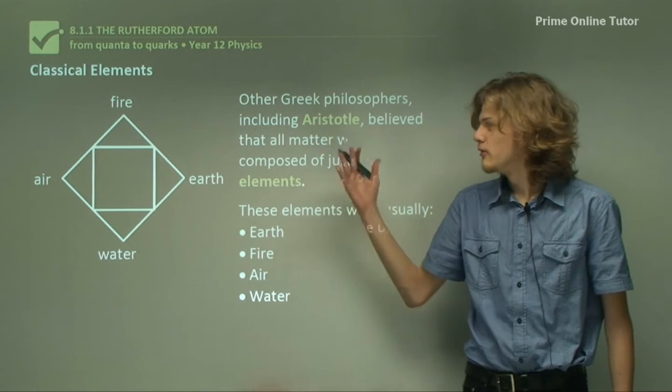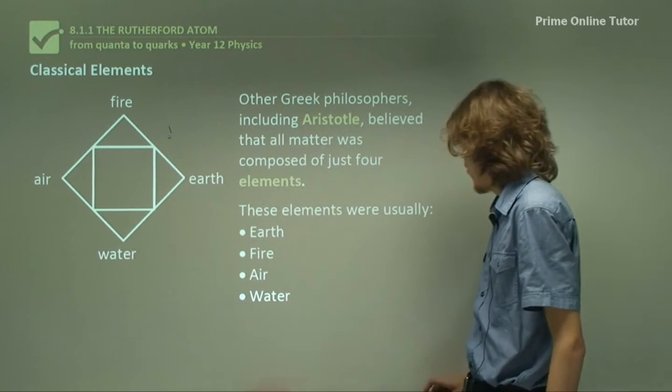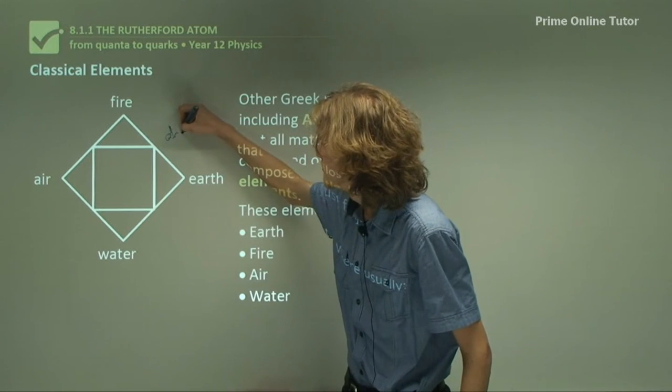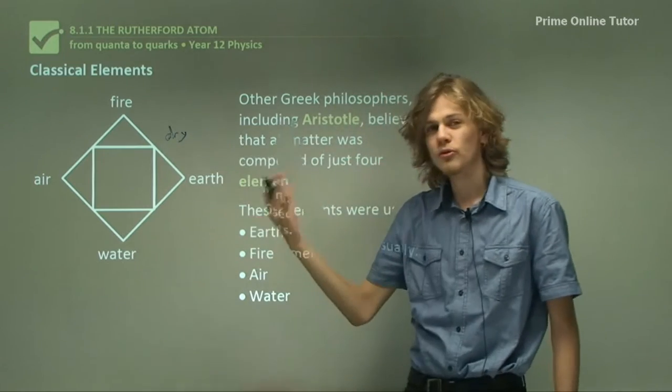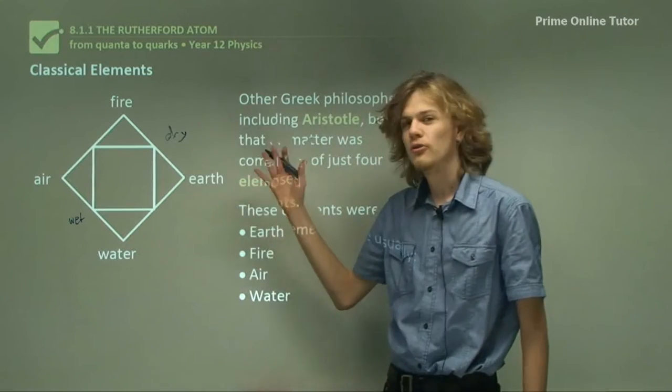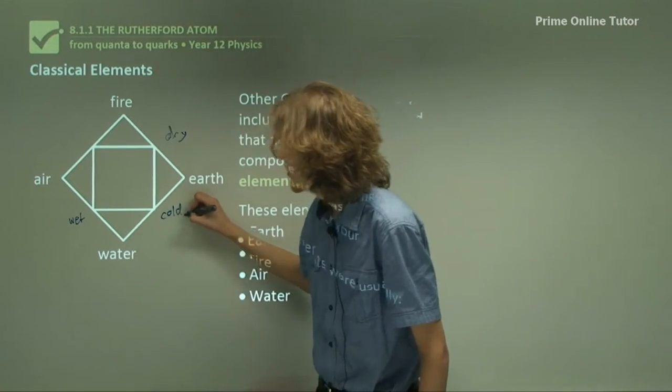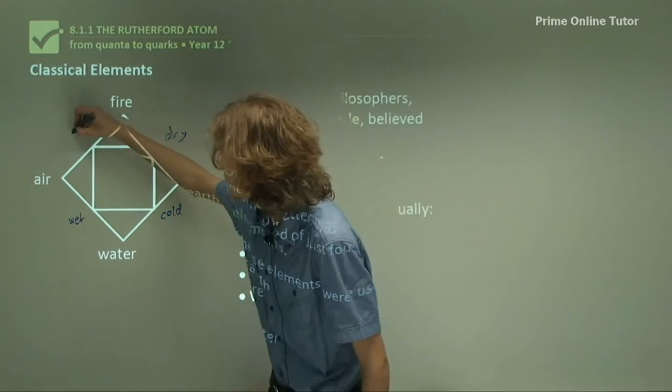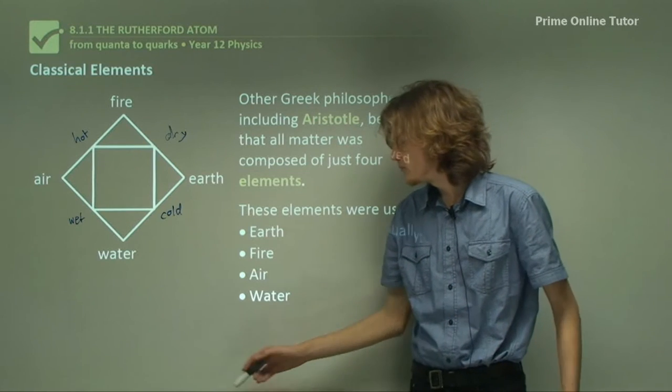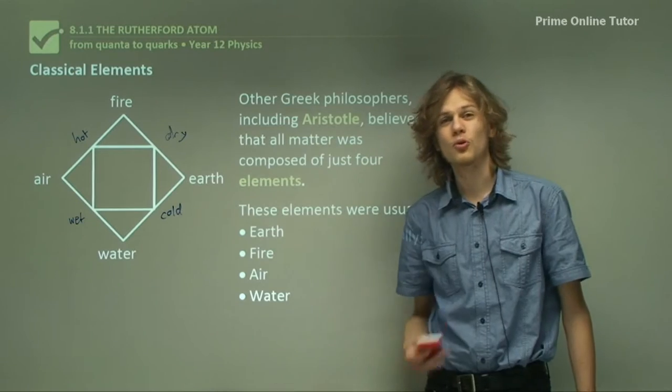We can see on this little chart over here that some of them have similar properties. For example, fire and earth are both dry. Air and water are both fluid or wet. Earth and water are both cold. And fire and air are both hot and sort of flowing. And so you can see that the ancient model was able to describe a few of the different forms of matter, which is why of course it was so popular.